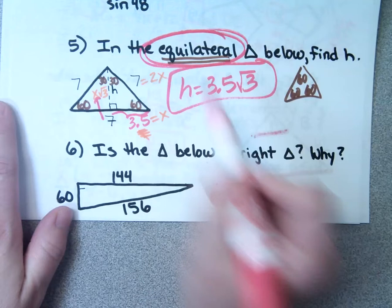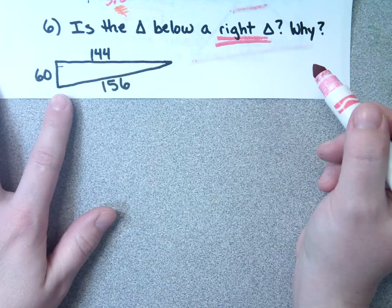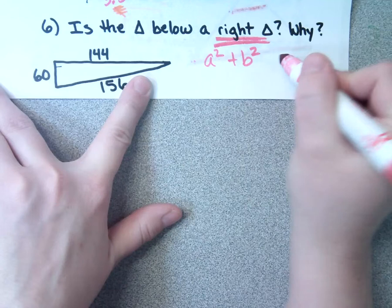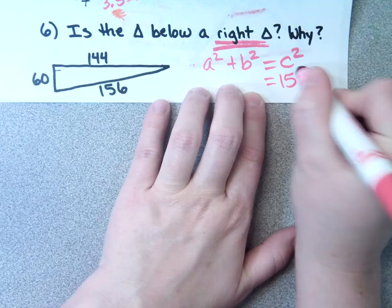Number 6: is the triangle below a right triangle? I need to know that A² + B² = C². If it's a right triangle, this is what's going to happen. Which one's C? 156. So I need to square 156, square 60, add that to 144 squared, and see if those two sides equal. Does 60² + 144² equal 156²?